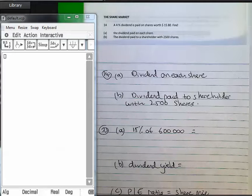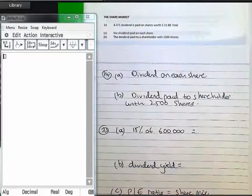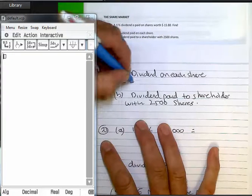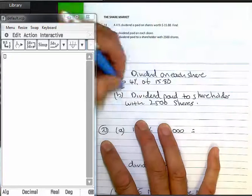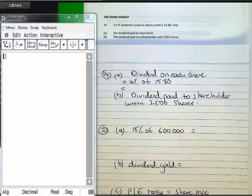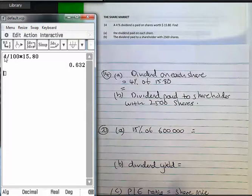In the first instance, in number 14, the company is paying a 4% dividend on shares worth $15.80. So in other words, it's 4% of $15.80 on the calculator. We're paying 63 and a bit of cents per share, or 0.63.